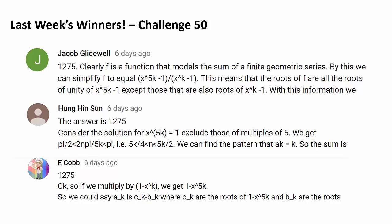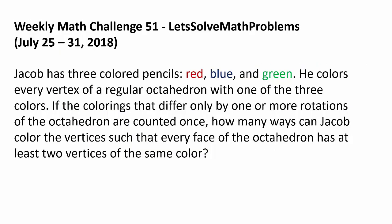Now let's get to this week's challenge. Jacob has 3 color choices: red, blue, and green. He colors every vertex of a regular octahedron with one of the three colors. If the colorings that differ only by one or more rotations of the octahedron are counted once, how many ways can Jacob color the vertices such that every face of the octahedron has at least two vertices of the same color?